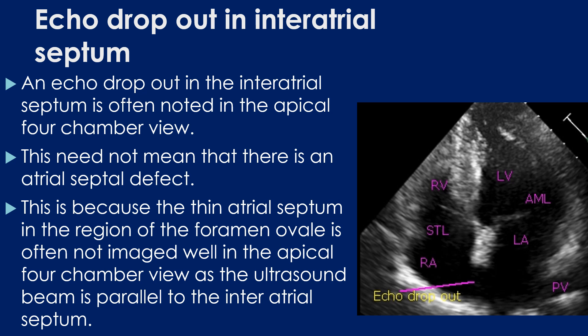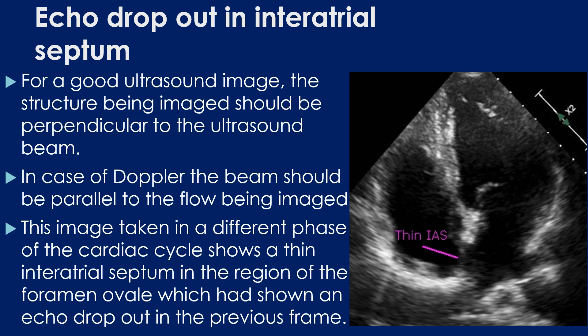This is because the thin atrial septum in the region of the fossa ovalis is often not imaged well in the apical 4-chamber view, as the ultrasound beam is parallel to the intra-atrial septum in this view. To get a good ultrasound image, the structure being imaged should be perpendicular to the ultrasound beam.